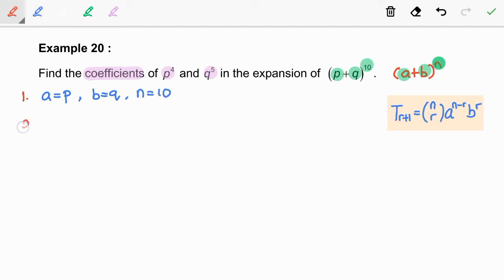Step 2: We are going to substitute a, b, and n into the r+1 term. Please refer to the formula over here. So we have T_{r+1} = (10 choose r) p^{10-r} q^r.